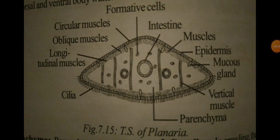In the diagram: the circular muscles form rings around the body; below that, the longitudinal muscles are arranged anteroposteriorly; the oblique muscles are embedded between the longitudinal muscles; and the vertical muscles are arranged between the dorsal and ventral body wall. The ventral surface shows cilia.